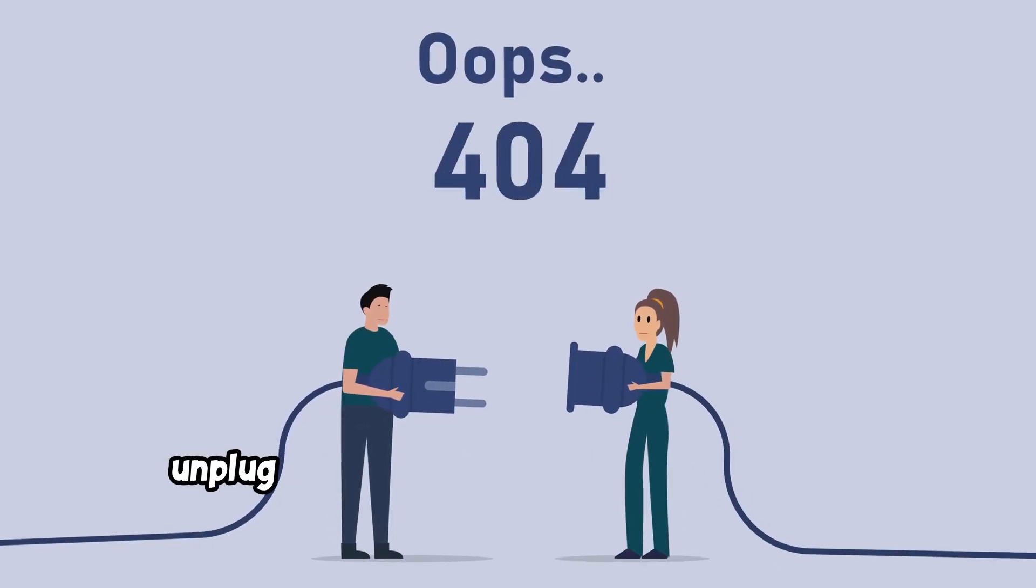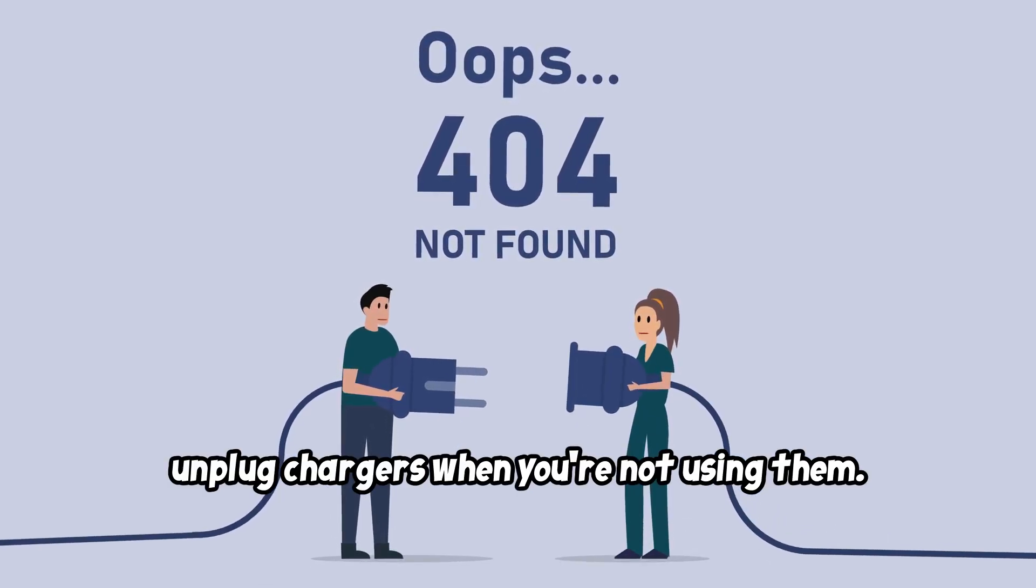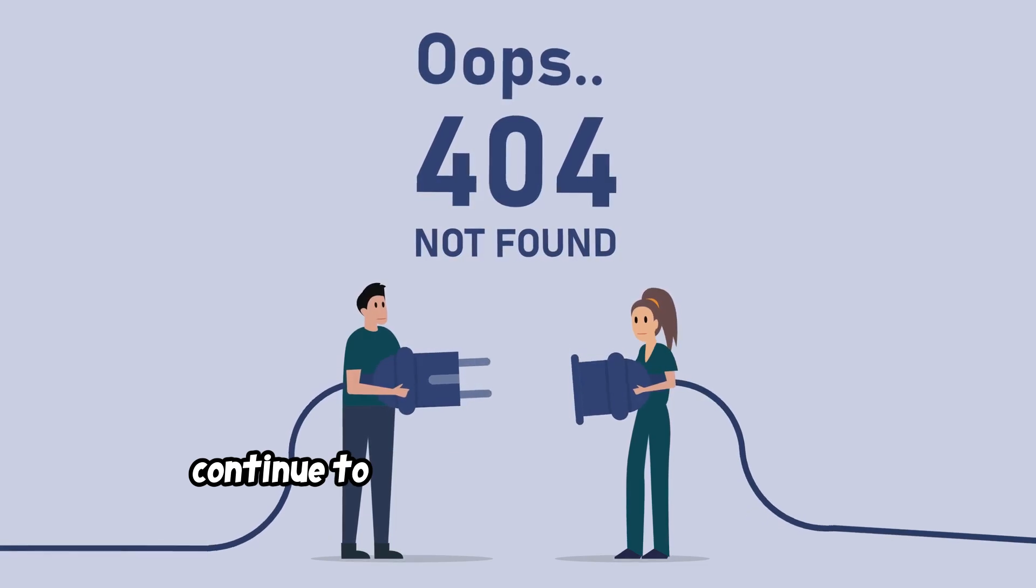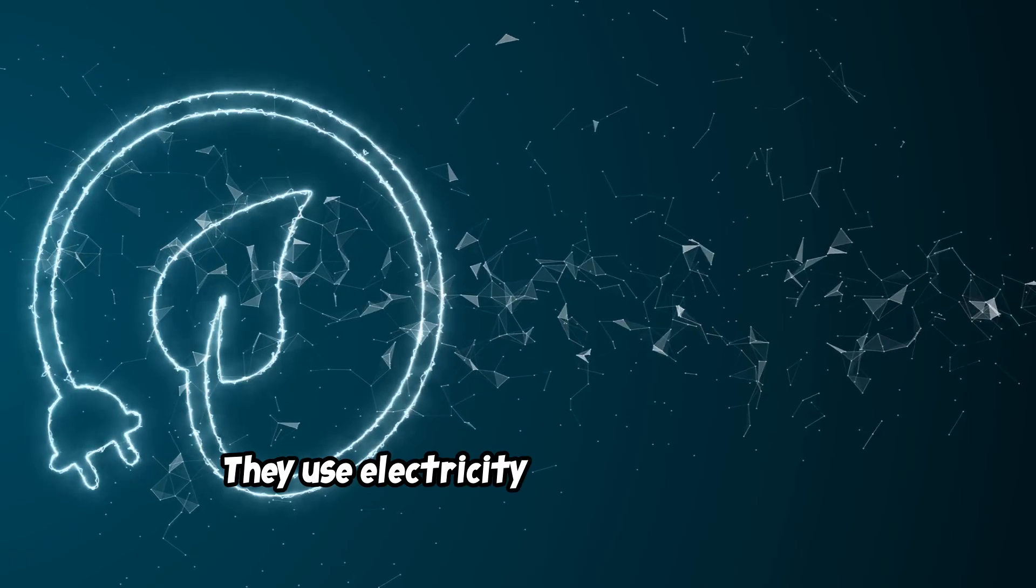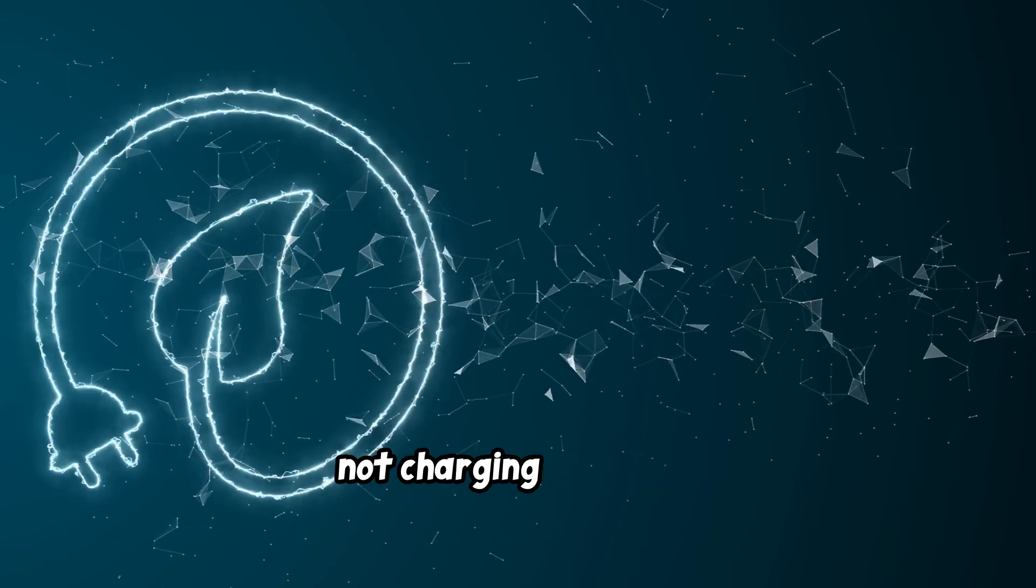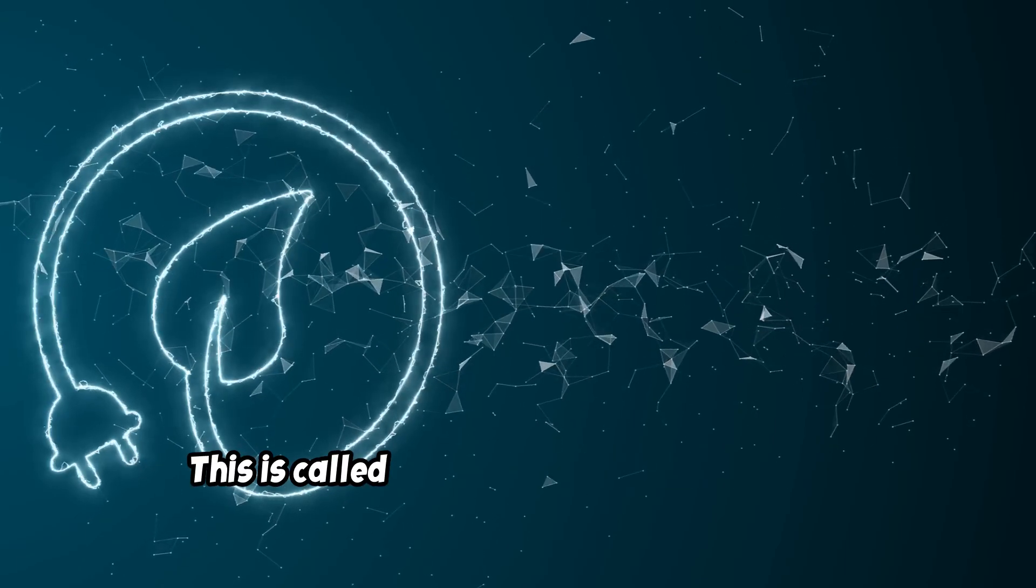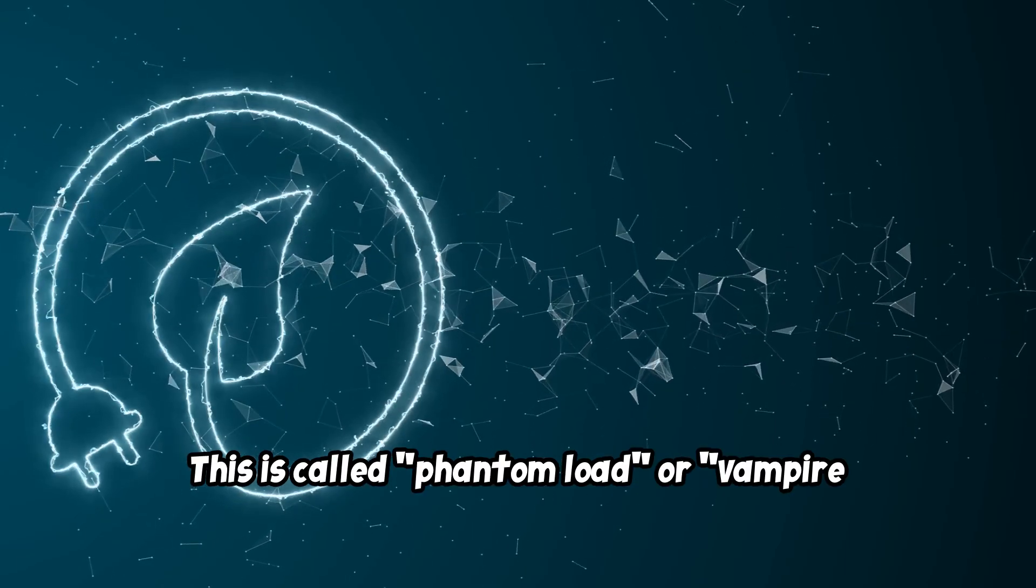Second, unplug chargers when you're not using them. Many people don't realize that chargers continue to draw power even when they're not connected to a device. They use electricity even when they're not charging anything. This is called phantom load or vampire power.